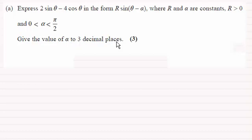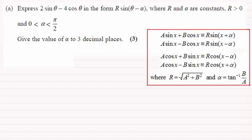To do this you should be familiar with these particular identities — if not, do check them out on my website in the tutorials. You'll notice that 2 sin θ minus 4 cos θ corresponds to this second identity here.